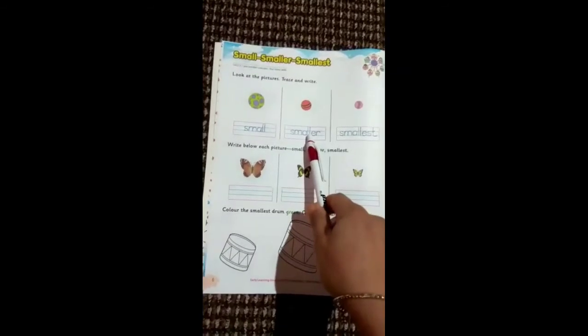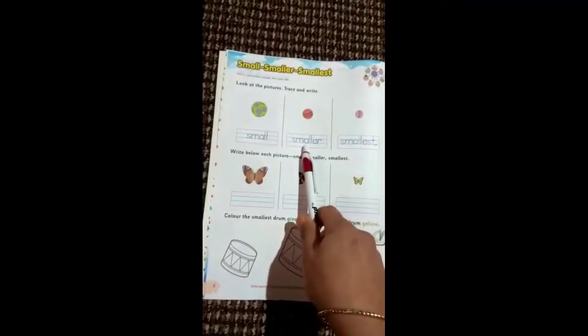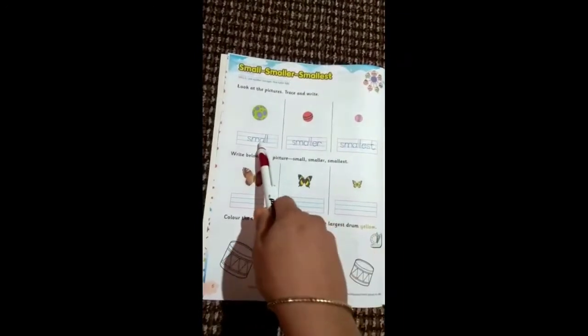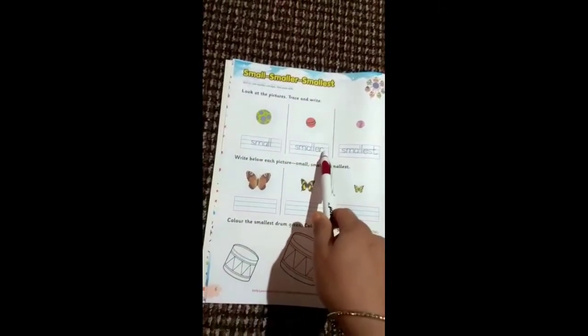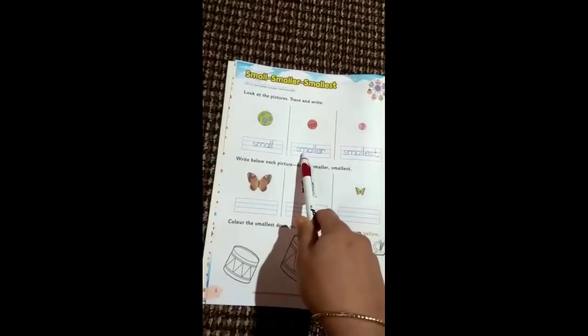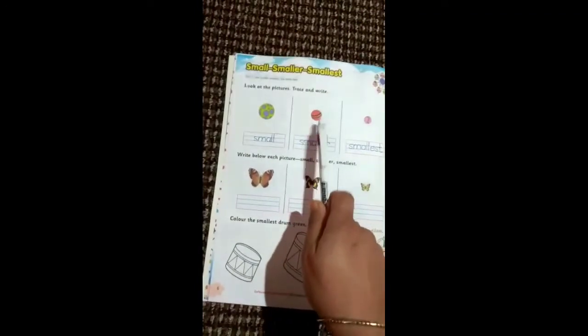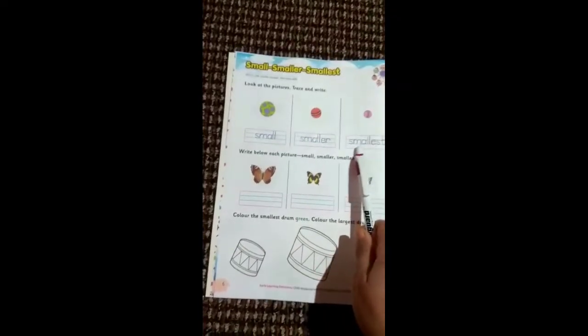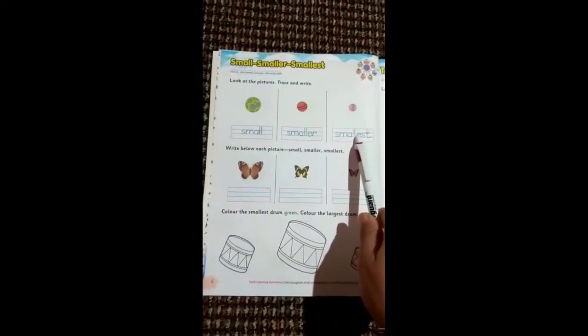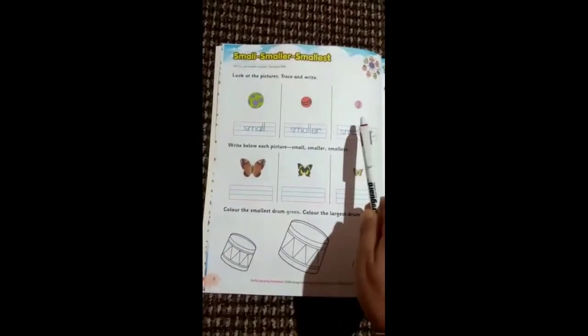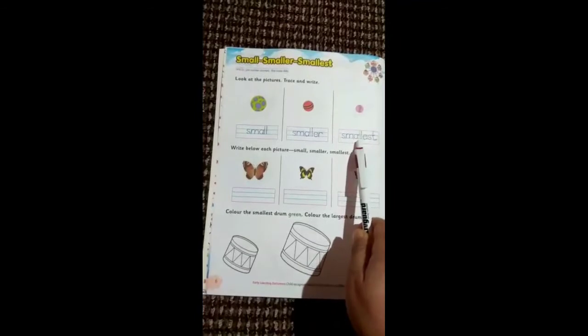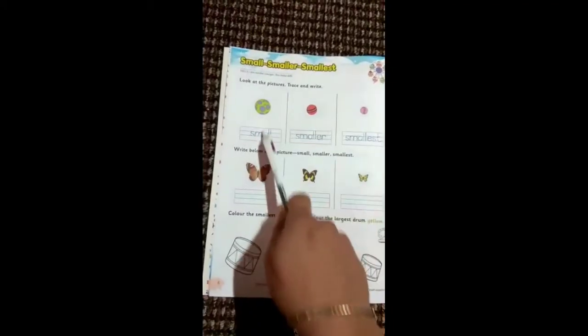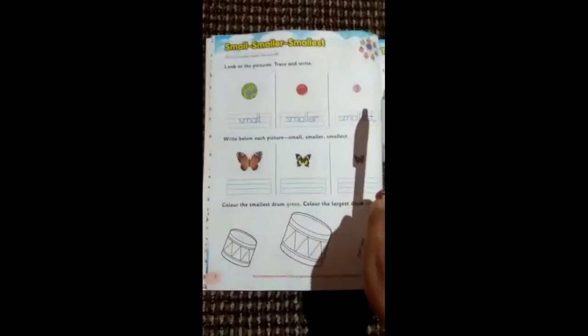We use smaller for the middle object because smaller means it is lesser in size than the first one. When we use 'er' as suffix to small, that means this object is lesser in size than the first but greater in size than the third. And when we use the term smallest, that means the object which is captioned with the term smallest is much lesser in size than the other two objects.